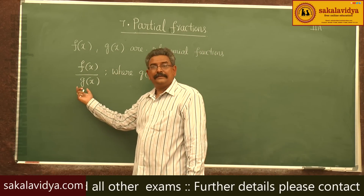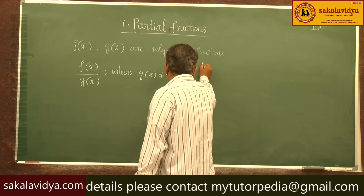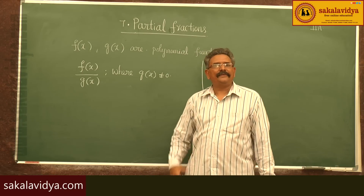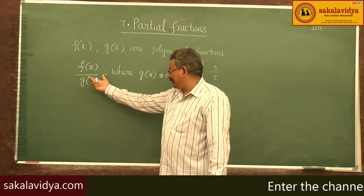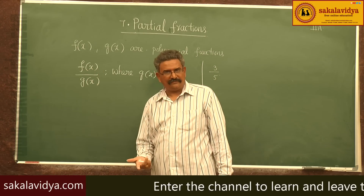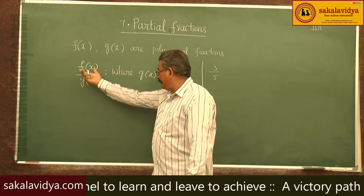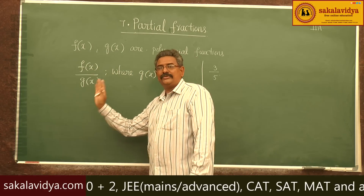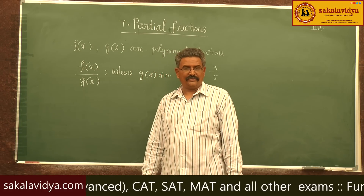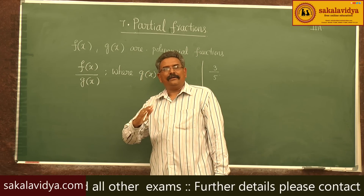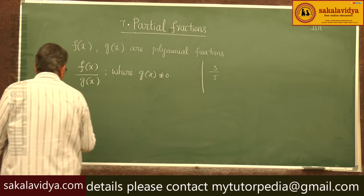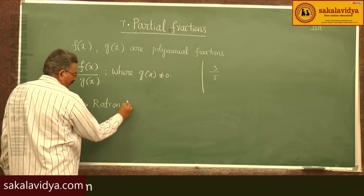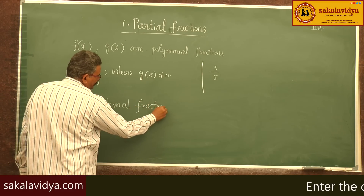But how does it appear? It appears just like if you take some numerical values, something like 3/5. Generally, what do you call 3/5? 3/5 is a fraction. Why cannot we say that f(x)/g(x) is also a fraction? We can say f(x)/g(x) is also a fraction, but since it is a rational function it is better to say rational fractions. So today let us discuss rational functions — a rational function or rational fraction.